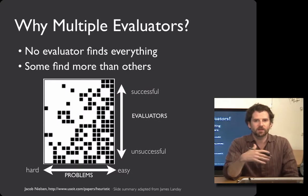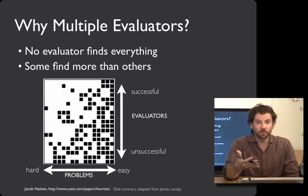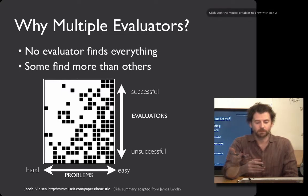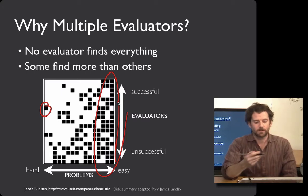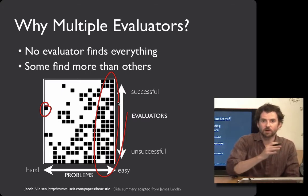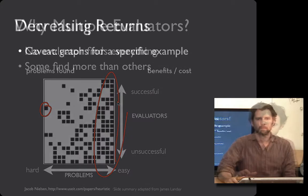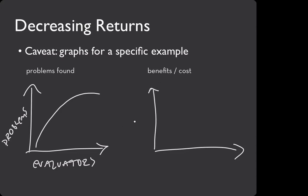Let's talk about why you might want to have multiple evaluators rather than just one. The graph on the slide is adapted from Jacob Nielsen's work on heuristic evaluation. Each black square is a bug that a particular evaluator found. An individual evaluator represents a row of the matrix, and there are about 20 evaluators in this set. The columns represent the problems — some were found by relatively few evaluators, and other stuff was found by almost everybody. No evaluator found every problem, and some evaluators found more than others. As you add more evaluators, they do find more problems, but it tapers off over time, so from a cost-benefit perspective, it stops making sense after a certain point.